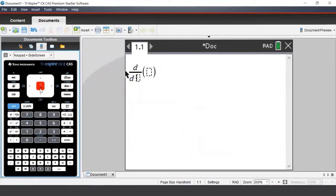First, we must enter which variable we'd like to differentiate with respect to, and then our expression. We'll differentiate x squared minus x.